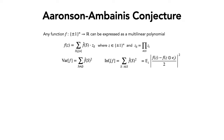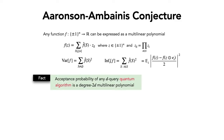The connection to simulating quantum algorithms comes from the fact that if you have a D-query quantum algorithm, you can represent its acceptance probability as a degree-2D multilinear polynomial. For low-degree multilinear polynomials, there is a nice connection: the total influence — the sum of all influences — is essentially the same as the variance up to factors of D, which we think of as small. So total influence is essentially the same as variance.